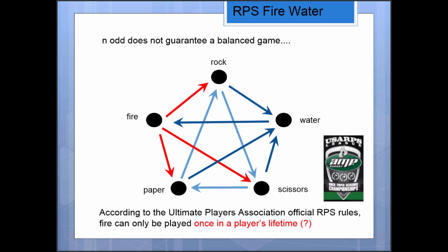So it is. And this is an example of n being odd. Here we have n5, but we don't have a balanced game. So how can we make our game nice and balanced?